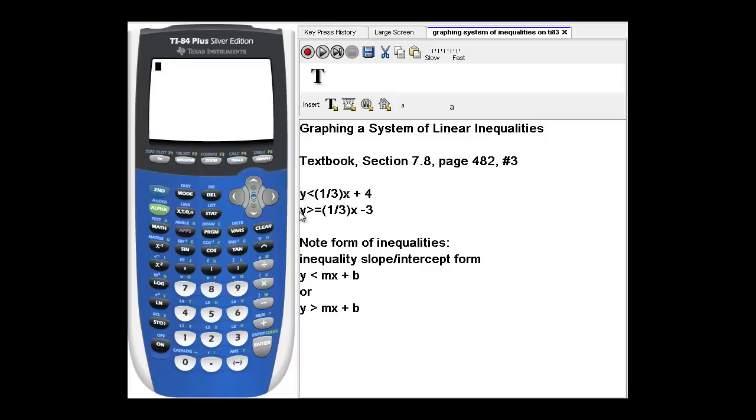Here, I've typed in the system of linear inequalities that I'm going to be graphing. The first inequality in the system is y is less than one-third x plus 4. The second inequality in the system is y is greater than or equal to one-third x minus 3.